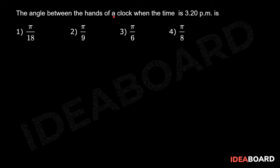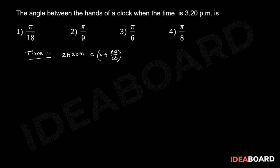The angle between the hands of a clock when the time is 3 hours 20 minutes. Given time 3 hours 20 minutes, that equals 3 plus 20 by 60 hours, that equals 3 plus 1 by 3, that equals 10 by 3 hours. Now about the hour hand.